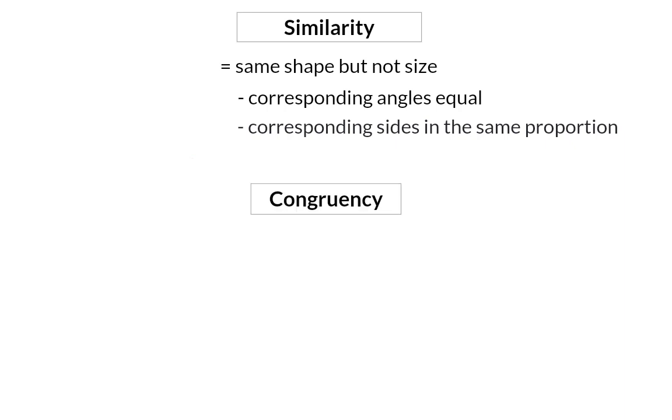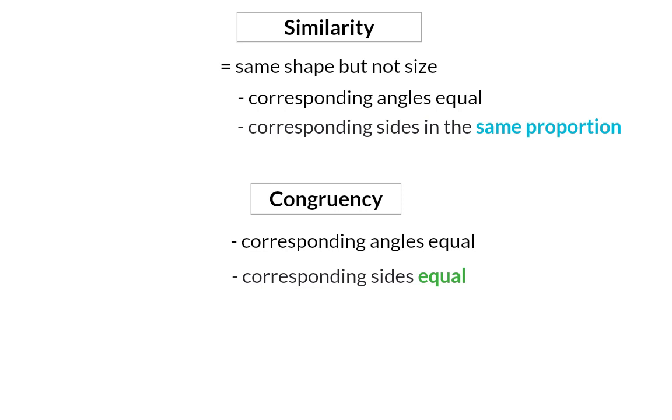Remember that congruency also had the requirement that the corresponding angles should be equal, but for congruency the corresponding sides had to also be equal. For congruency we use three equal lines or three horizontal lines, and for similarity we will use the symbol of three vertical lines.